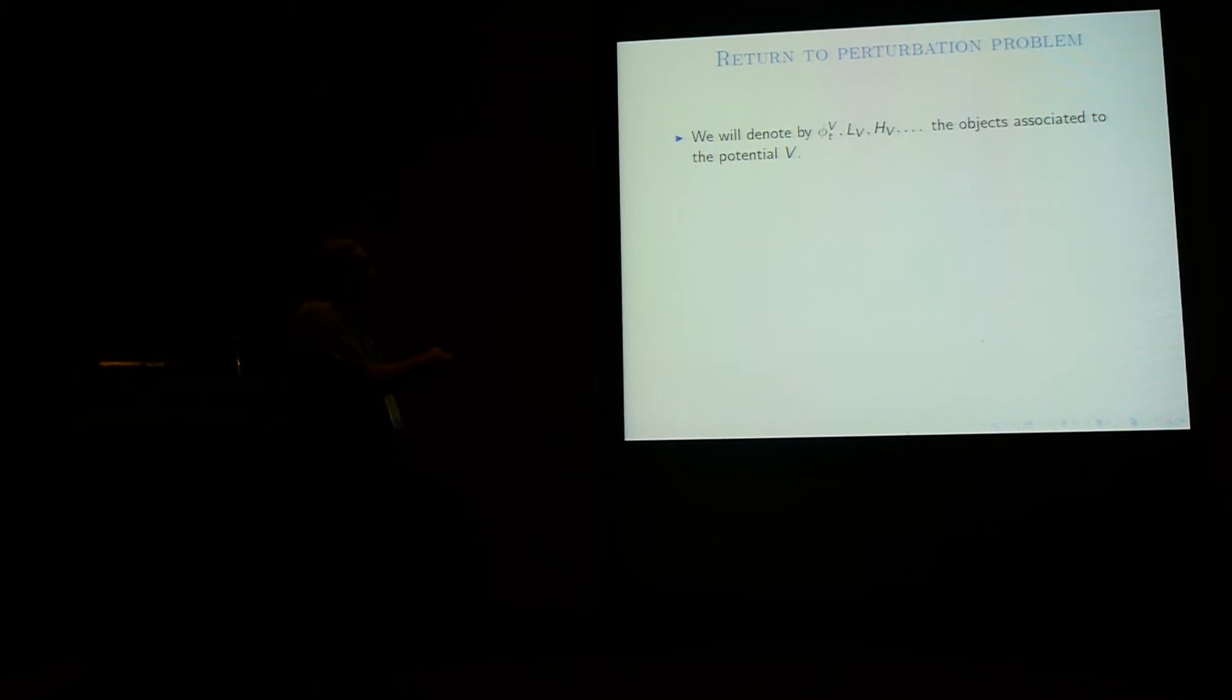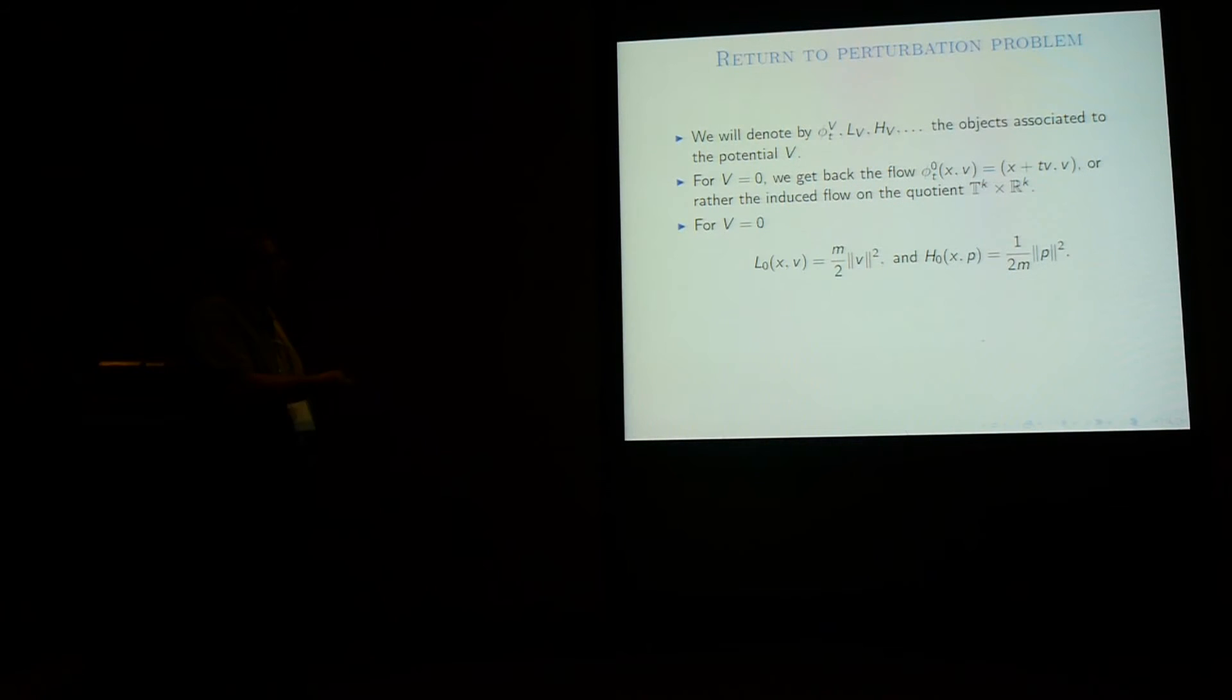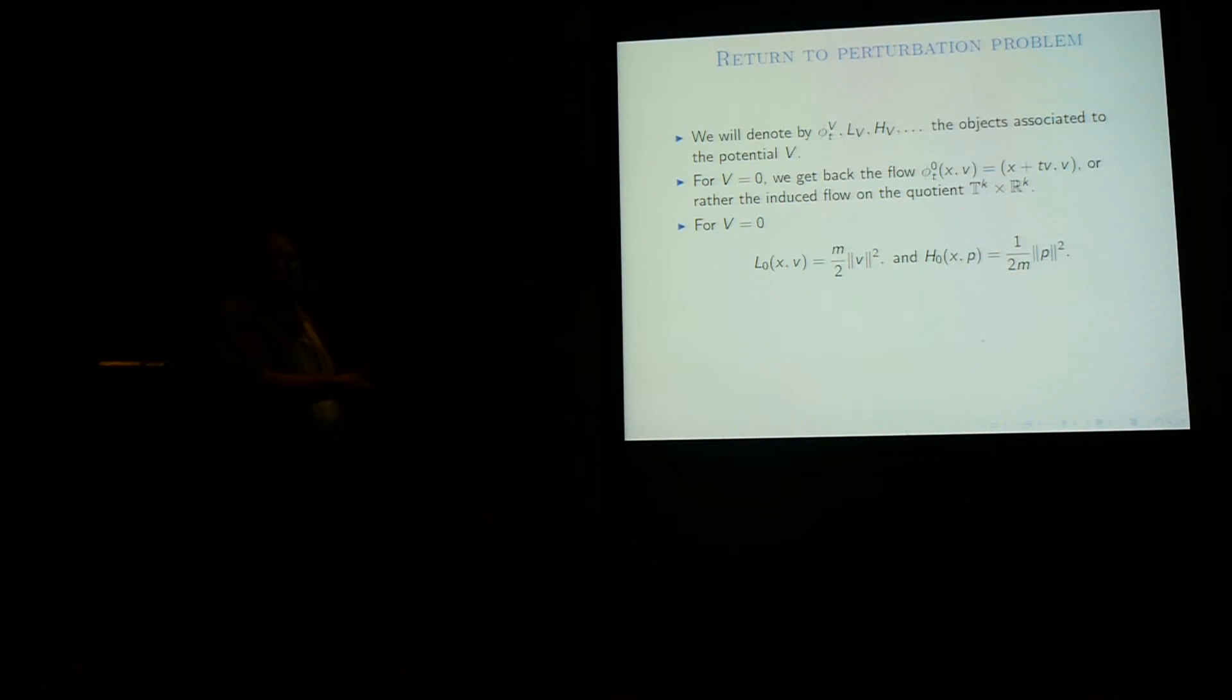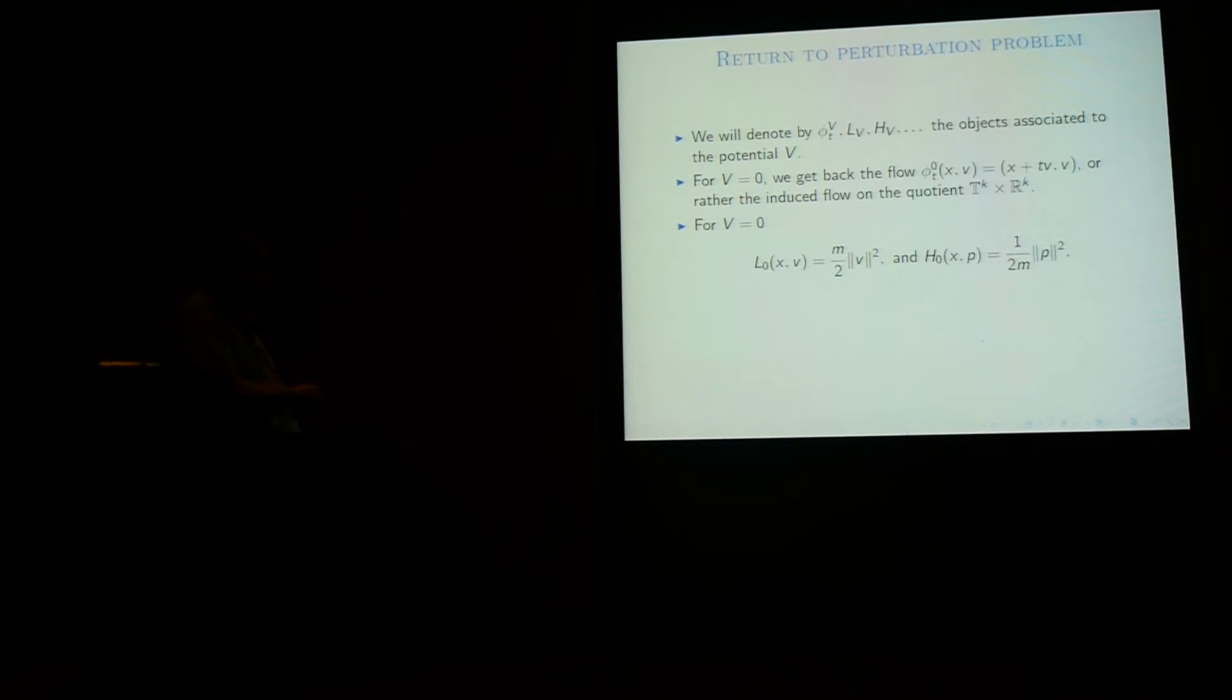In particular, H is constant on the orbit of the Hamiltonian flow, like always the case. Now of course, if I want to put dependence on the object on V, on the potential, I will put V in subscript. So for V equals zero, we get back the flow that we started with for the free particle. And the Lagrangian in this form, and the Hamiltonian in this form.